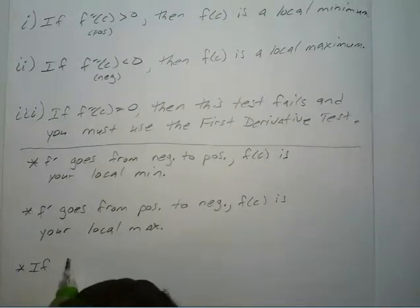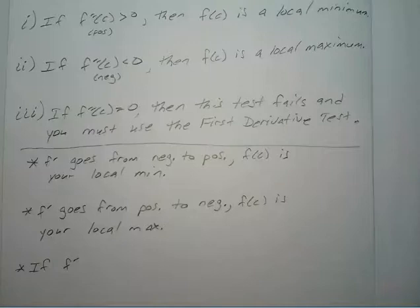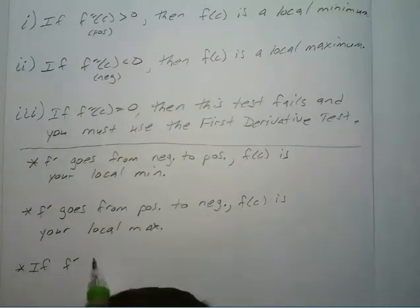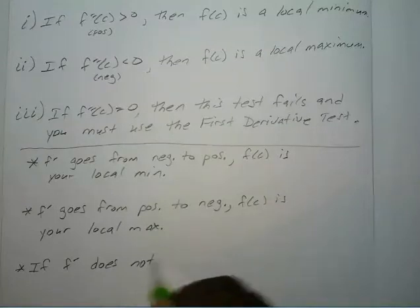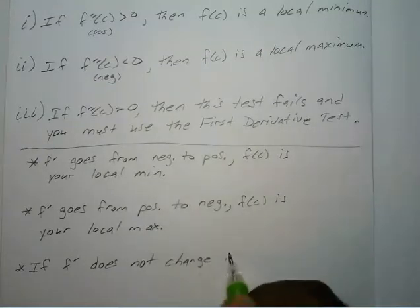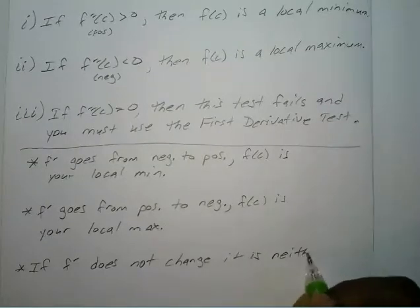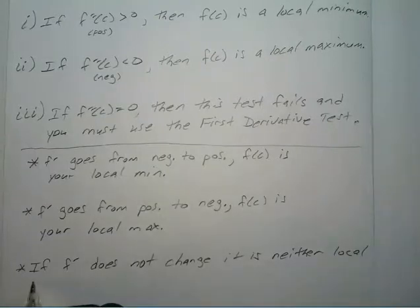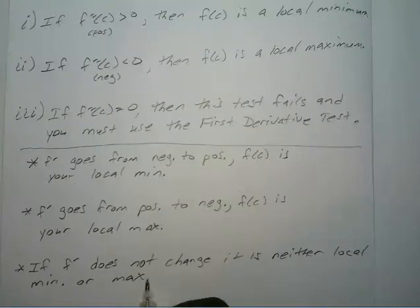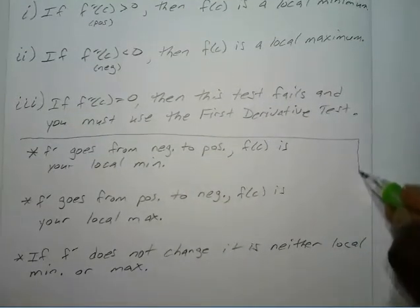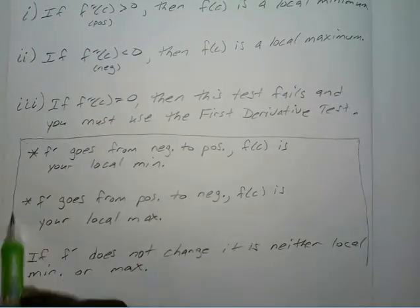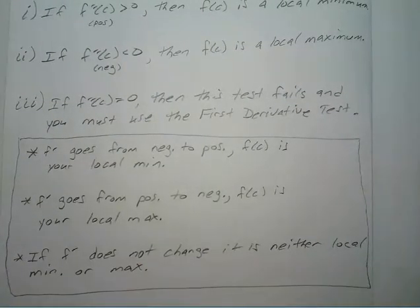Now if your first derivative doesn't change — meaning it's positive to positive or negative to negative — then that means it's neither local minimum nor maximum. So if it does not change, it is neither local minimum nor maximum. This is your first derivative test.